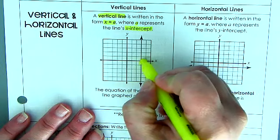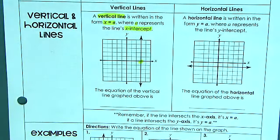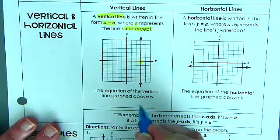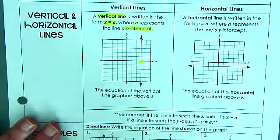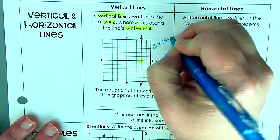So when I'm looking at the equation of the vertical line graphed above, it's because it's a vertical line and it's crossing the x-axis. It crosses the x-axis, which would be right here. This is x equals 3.